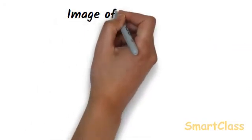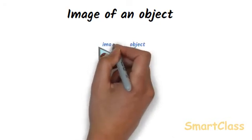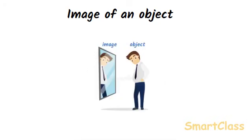Image of an object: When we look into a mirror, we see our face. The image we see in the mirror is a reflection of us. Here our face is the object and what we see in the mirror is its image. When light from our face falls on the mirror, the mirror reflects this light. The reflected light seems to come out of the mirror and we see an image of our face in the mirror.